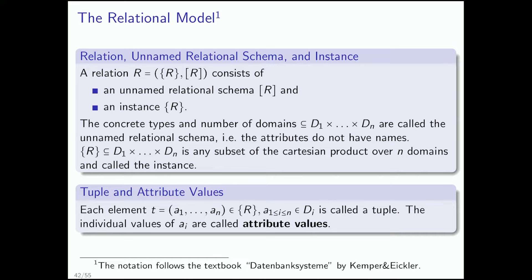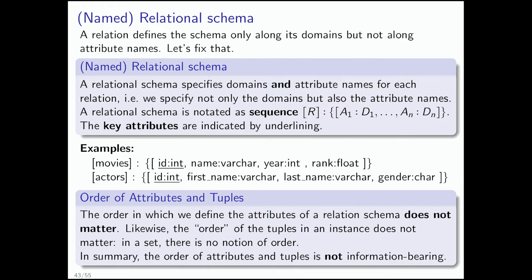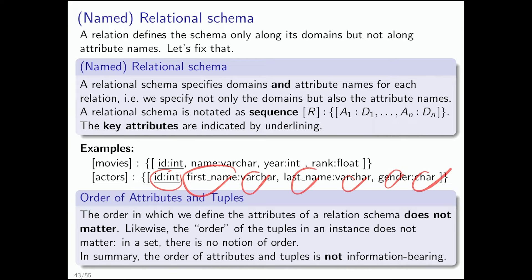Any element in this subset is called a tuple — typically denoted as small t. The tuple consists of attribute values along the defined attributes, and the individual values are called attribute values, similar to what we did for entity types. For example, 'actors' as a named relational schema has ID of type int, first name varchar, last name varchar, gender char, and so forth. Some of the attribute-domain pairs are underlined, just as we saw with key attributes.